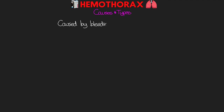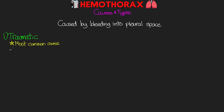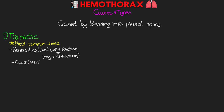A hemothorax is caused simply by bleeding into the pleural space. The first type is the traumatic hemothorax, which is the most common cause. This can result from penetrating trauma, where bleeding comes from injury to the chest wall and its structures and/or damage to the lung tissue itself. It can also result from blunt trauma — the typical culprit being rib fractures that damage intercostal vessels or the lung tissue. Damage to the aorta may also result in a massive hemothorax. Patients on anticoagulants are at greater risk.